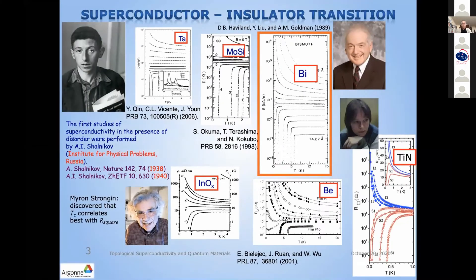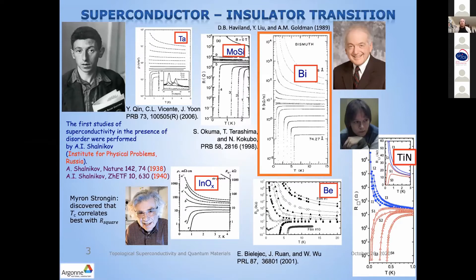The story actually started with the discovery of the superconductor-to-insulator transition. This iconic picture was obtained by Alan Golden's group, but the first studies were done in times immemorial by Shalnikov, long ago, who first saw the suppression of superconductivity in thin films.